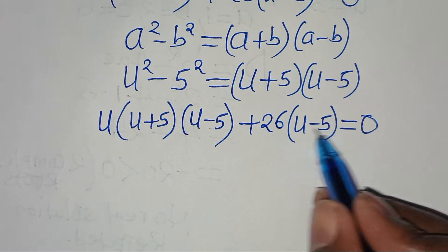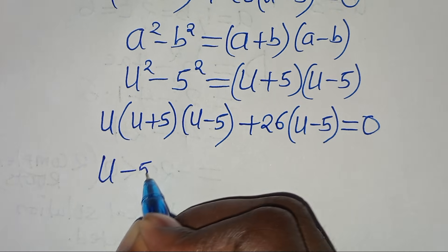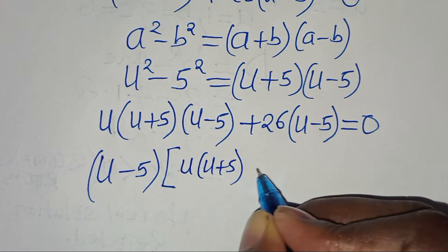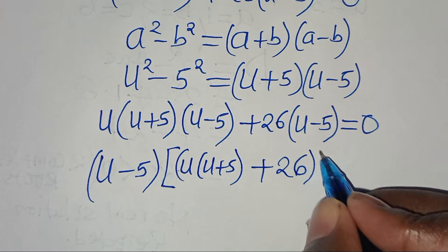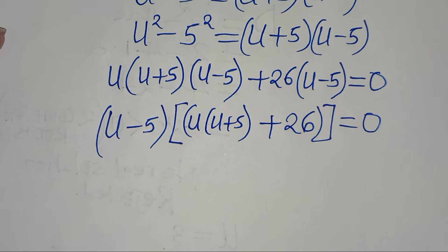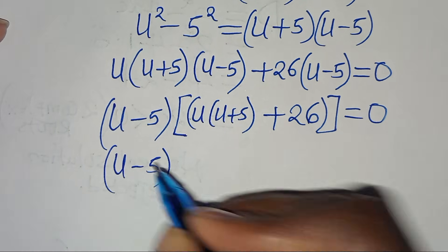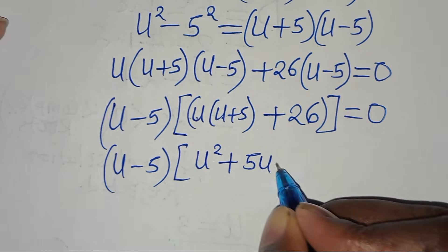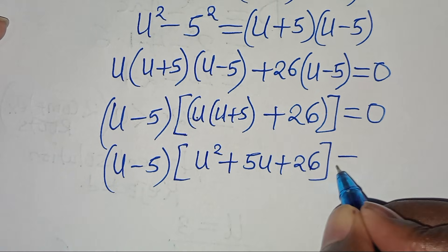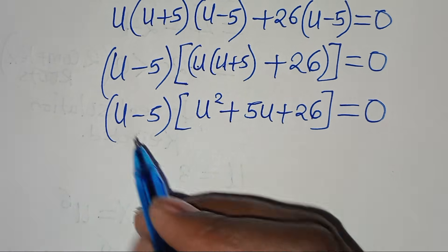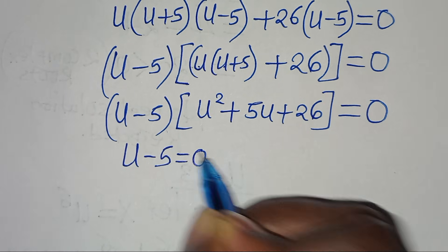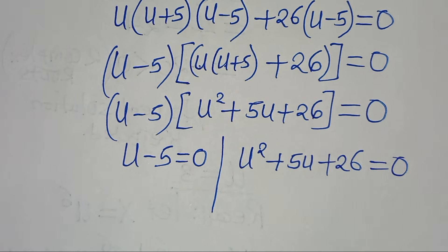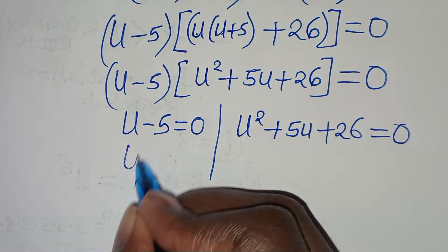So we have u minus 5 as a common factor, so we have u minus 5 into the parenthesis: u multiplied by u plus 5, then plus 26, equal to 0. Expanding, we have u minus 5 into the parenthesis: u times u is u squared, then plus u times 5 which is 5u, then plus 26, equal to 0. So we have got two parts: the first part is u minus 5 equal to 0, and the second part is u squared plus 5u plus 26 equal to 0. From the first part, u is equal to 5.